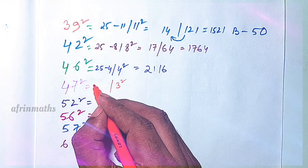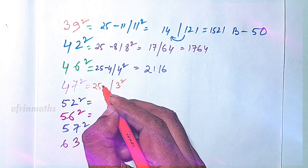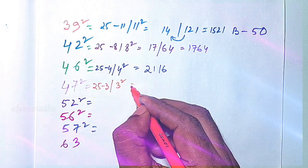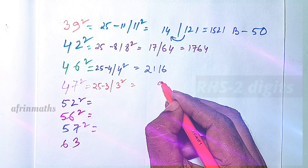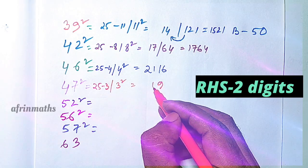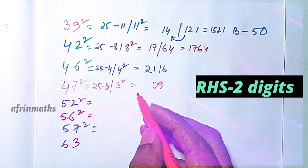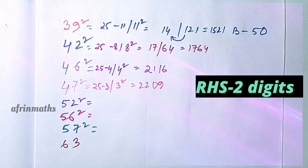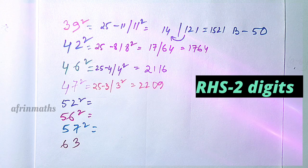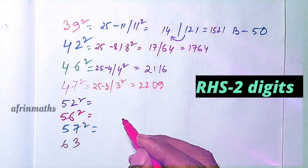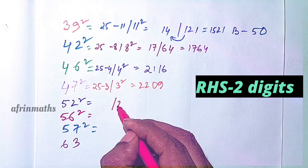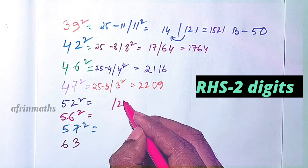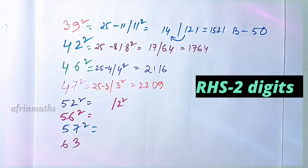Now let us check 47 squared. It is 3 away from 50, so we subtract 3 from 25, giving 22. 3 squared is 09. Since we write two digits, the answer is 2209, which is the square of 47.